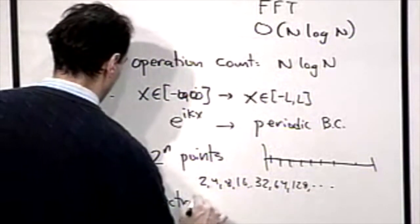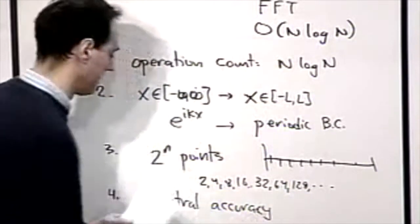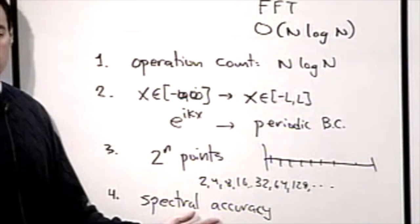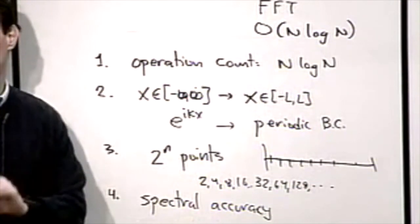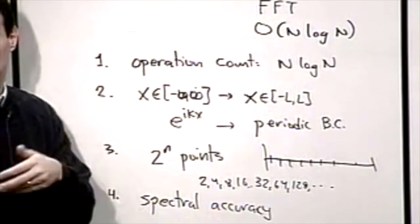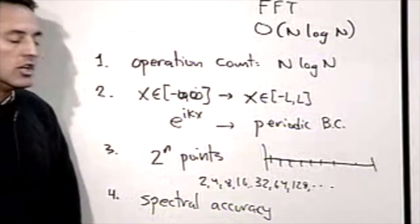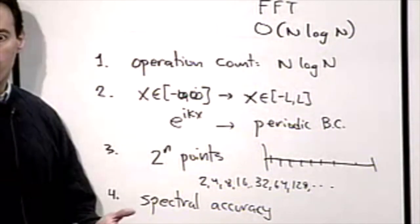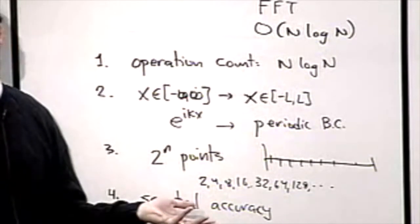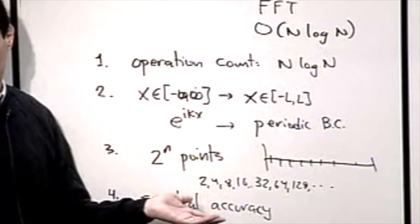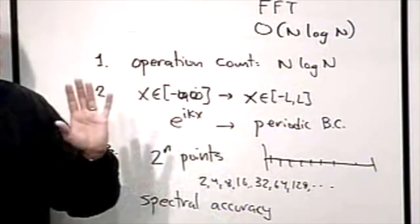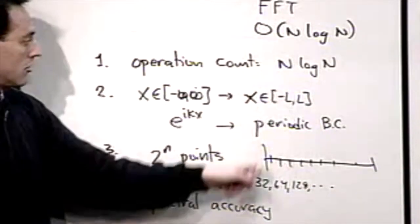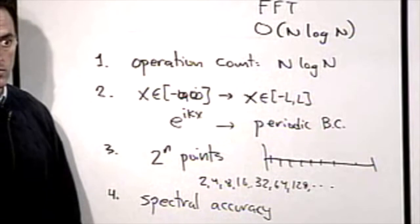The third major feature is spectral accuracy. Finite difference routines gave us second-order or fourth-order accurate methods based on Taylor series. Spectral methods have what's called infinite-order accuracy — far exceeding any Taylor-series discretization. That's a huge win, making spectral methods a vital tool.